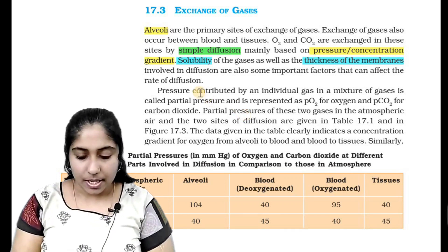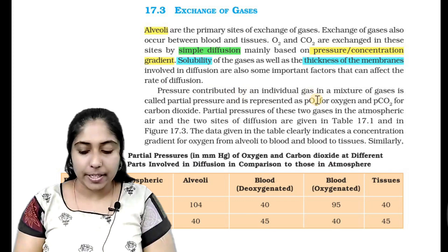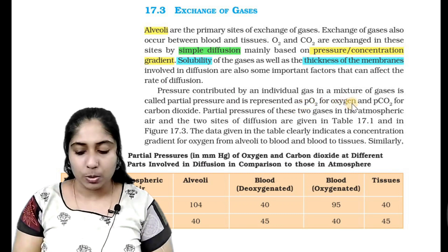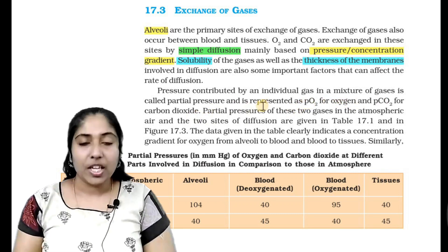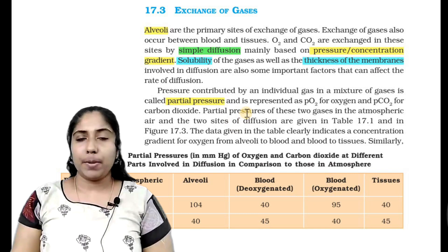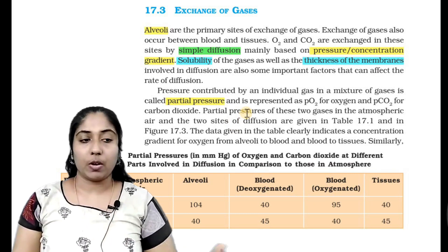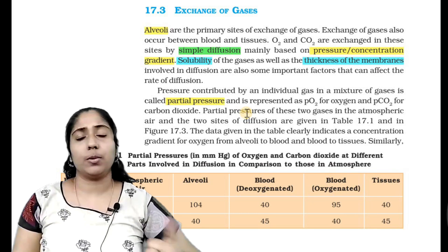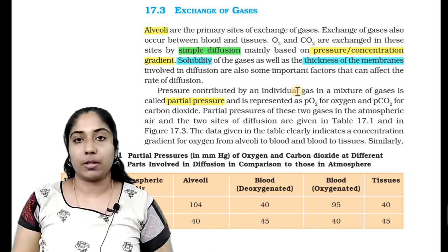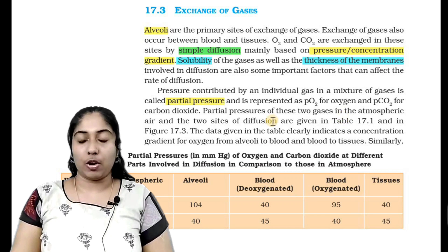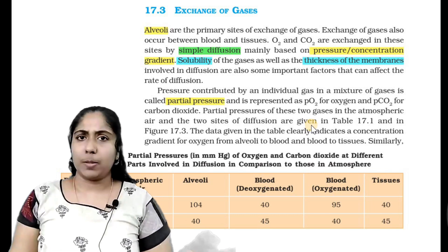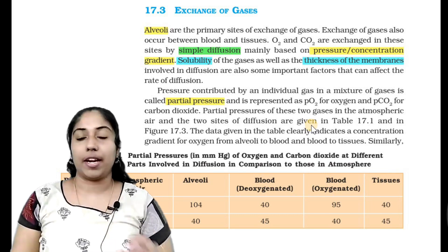The pressure contributed by an individual gas in a mixture of gases is called partial pressure, and it is represented as PO2 for oxygen and PCO2 for carbon dioxide. There is sometimes confusion between PCO2 and CO2. If there are a lot of gases — oxygen, carbon dioxide, hydrogen, and nitrogen — and we need just the carbon dioxide pressure, that means the partial pressure of carbon dioxide. Similarly for partial pressure of oxygen. That means partial pressure.